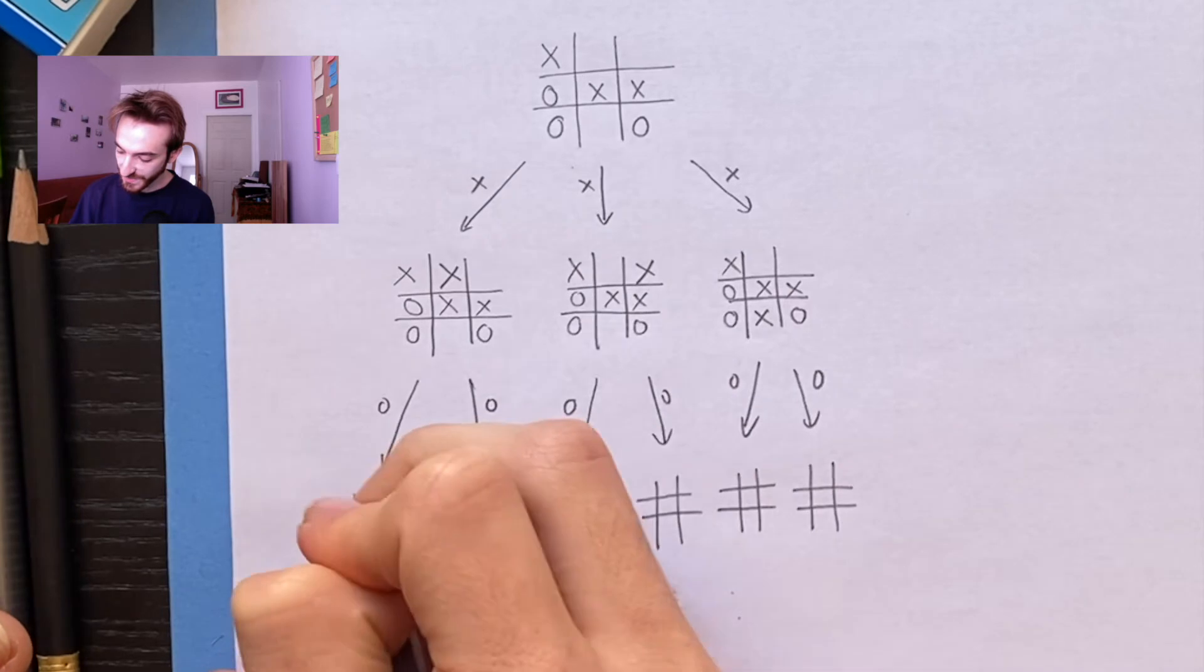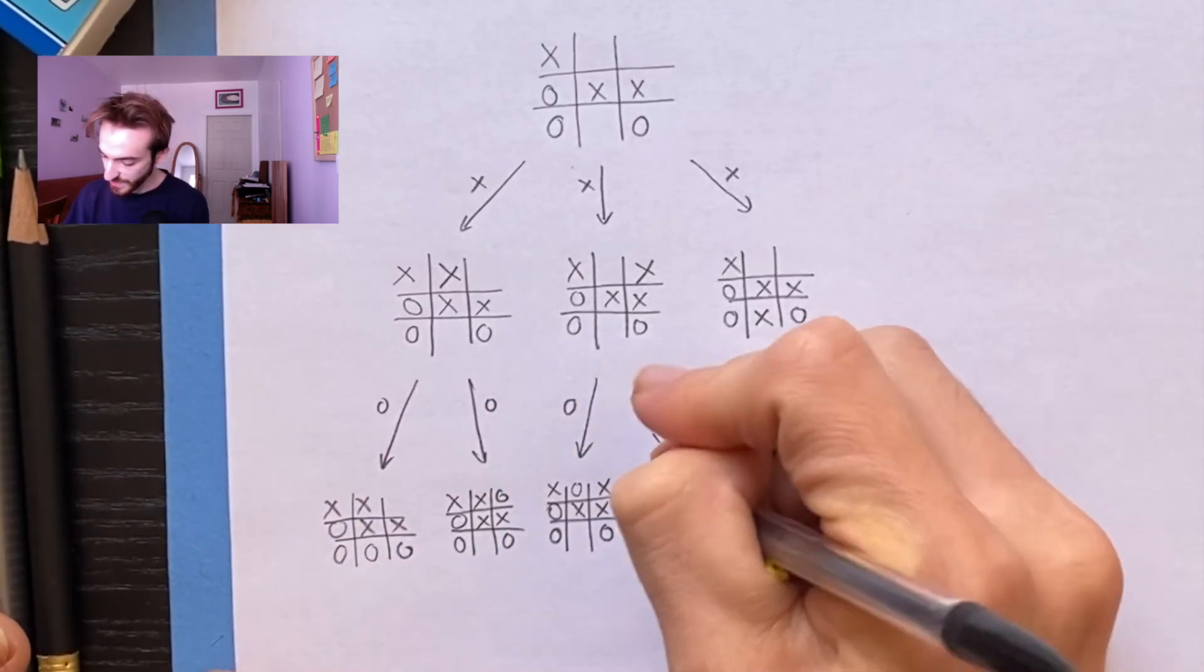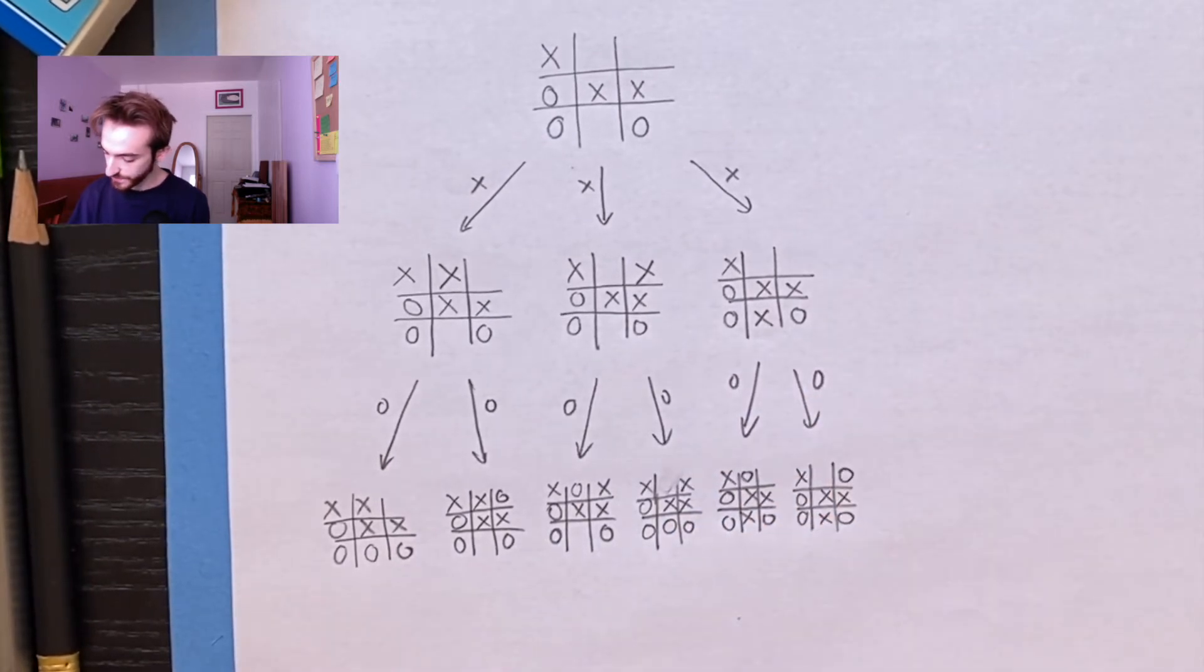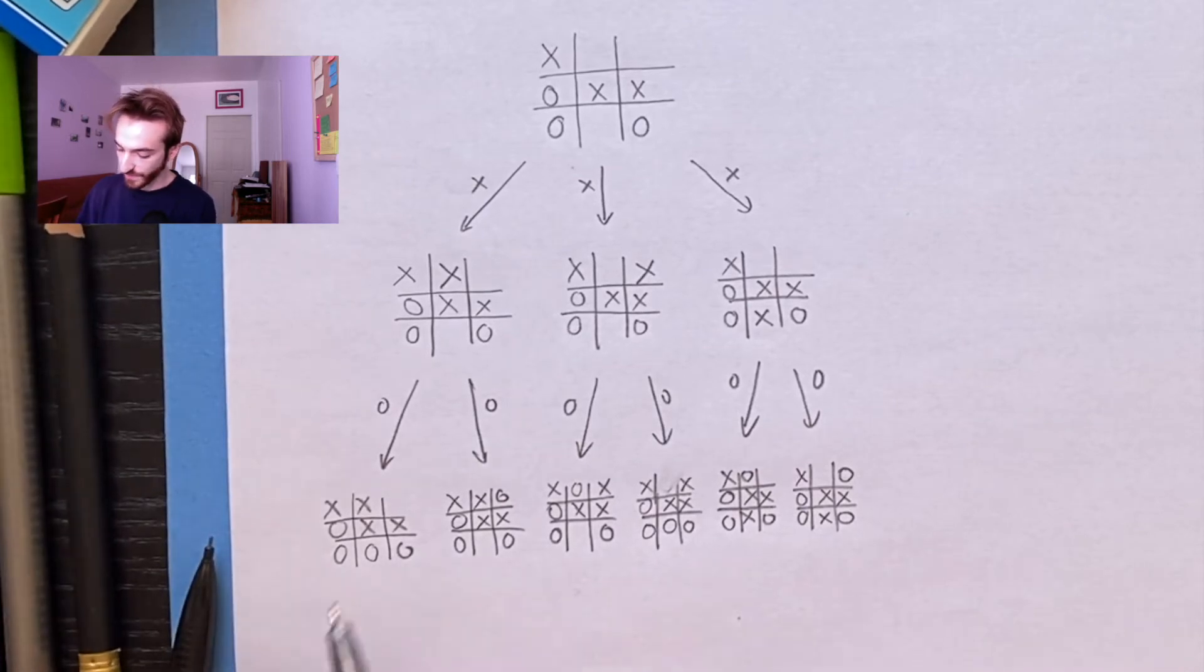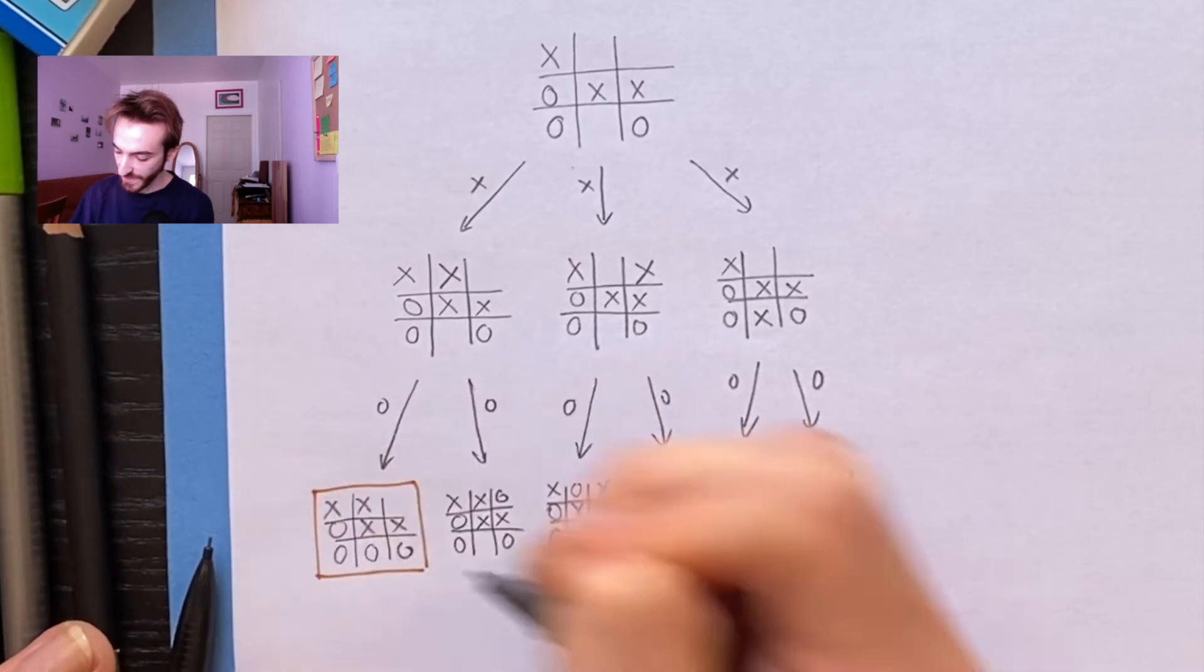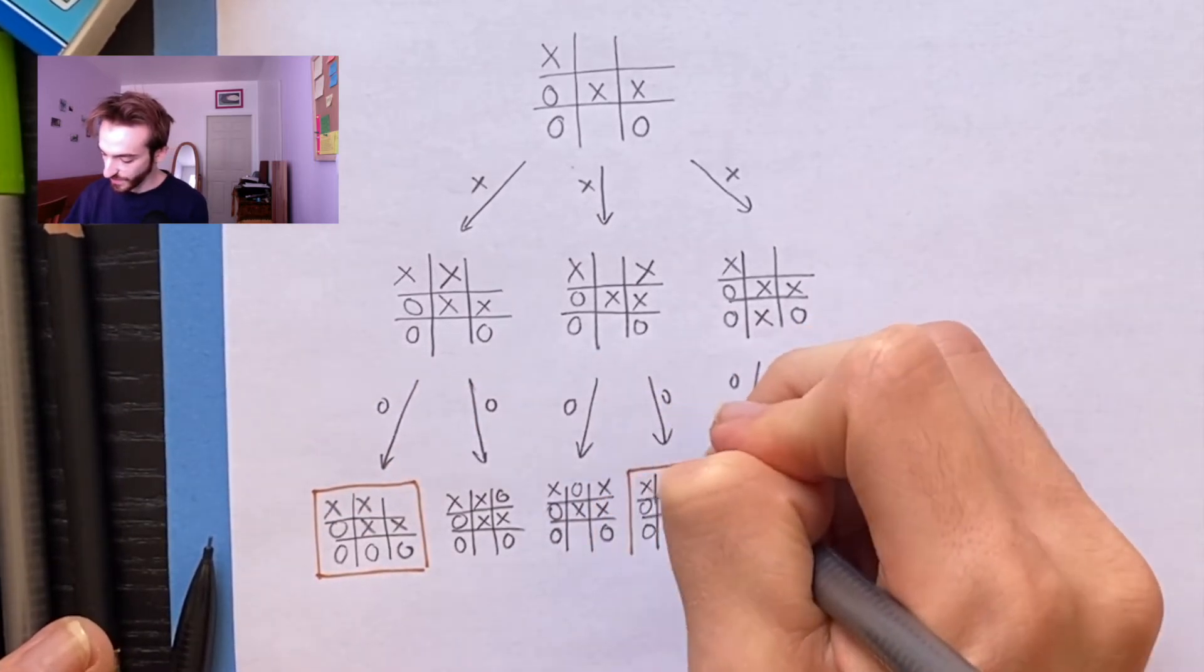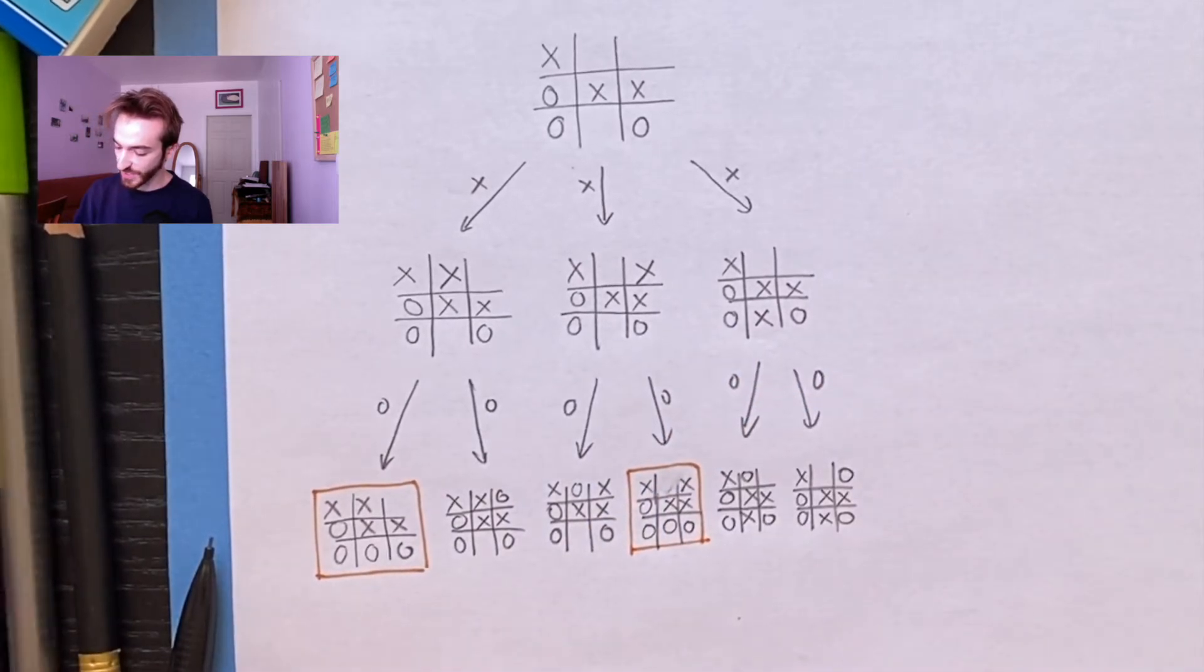And you even include the stupid moves, the moves that you know no human would ever actually make, because the computer can't really tell right away. Some of these positions, you'll see the game is already over. So if the game is over and O has won, I'm going to color that orange. Orange means O won the game. So this is already a win for O, this is already a win for O. The rest of the games, there's still more playing to do. It's X's turn, and there's one move that X can make in each scenario.